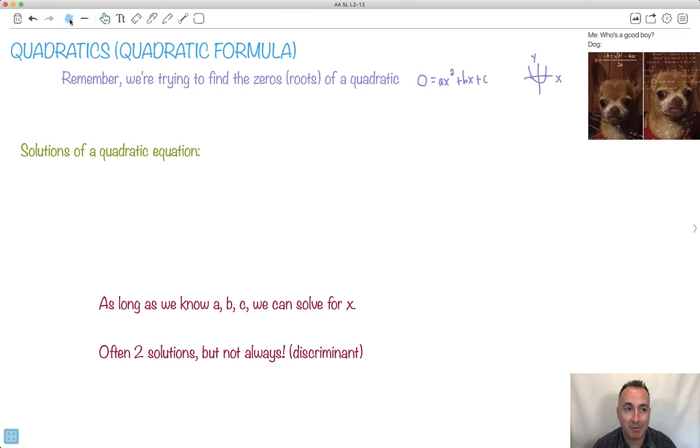We're still trying to solve quadratics. We're trying to remember, take a quadratic equation and find out what value makes f of x equals zero. In other words, we're trying to find out where it crosses the x-axis.